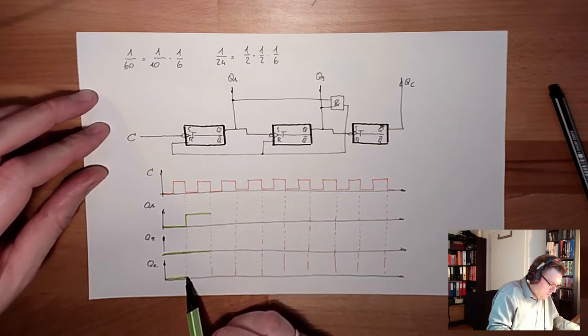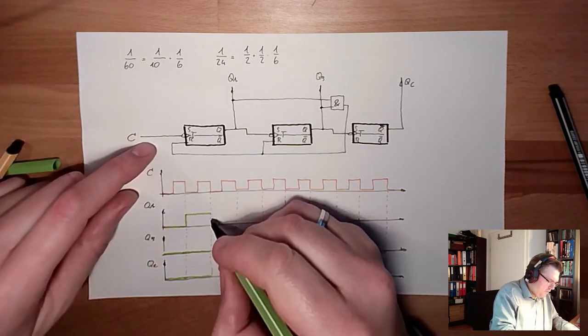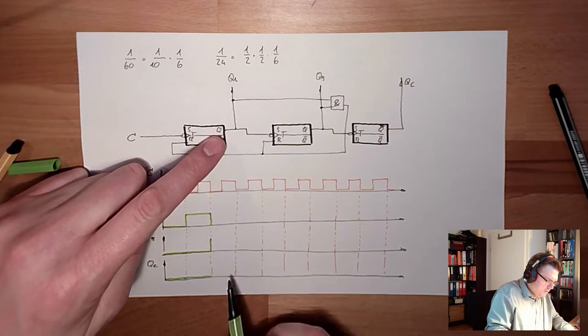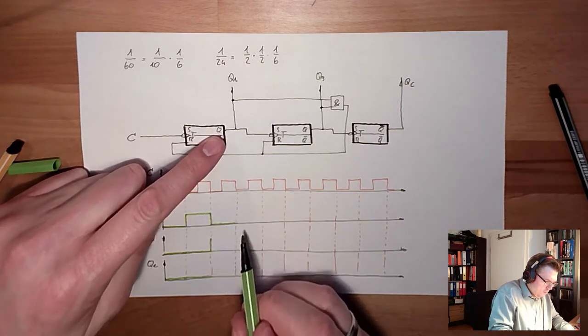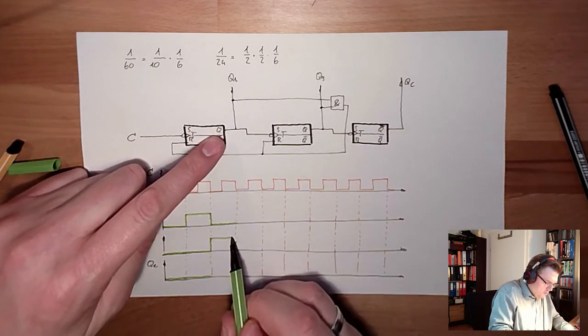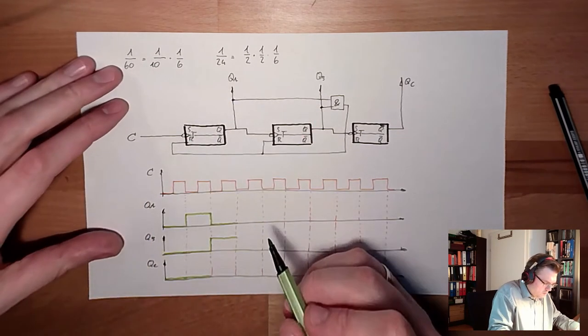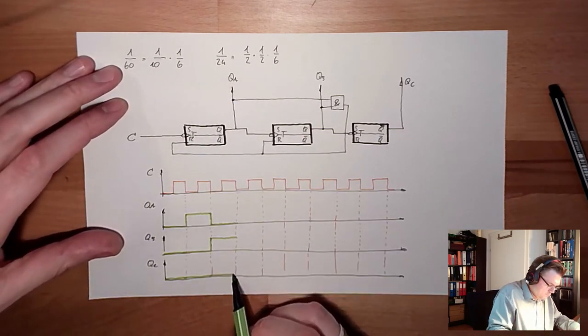This will look like this. Here, next falling edge, this will toggle. Because I have a falling edge, this will toggle. This will not toggle, the AND is also not fulfilled because this is zero and this is one, no AND, zero.